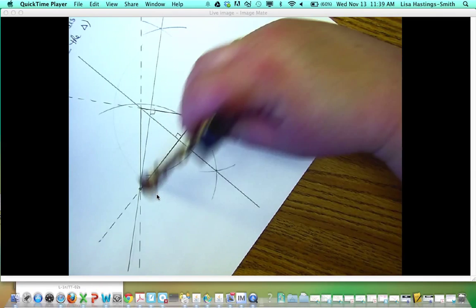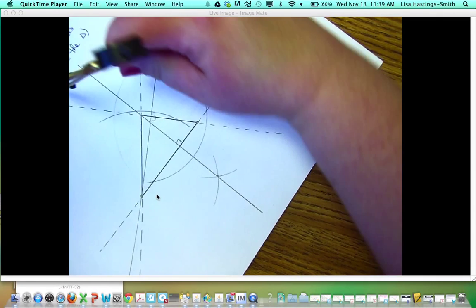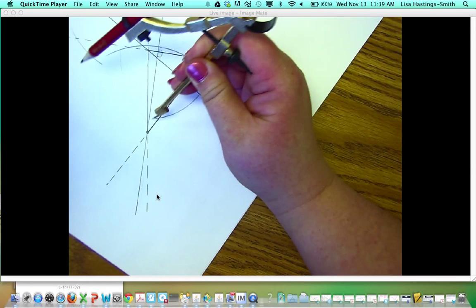So from this vertex, I'm going to make an arc, and then from here, like this.